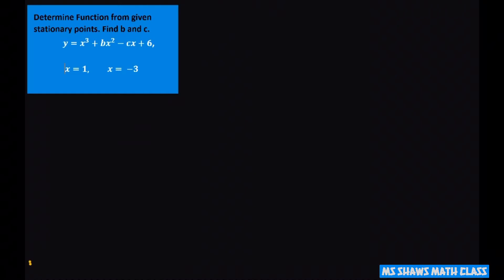So the first thing we want to do is find our derivative as we normally do to find stationary points. And that's going to give you 3x squared plus 2bx minus c.